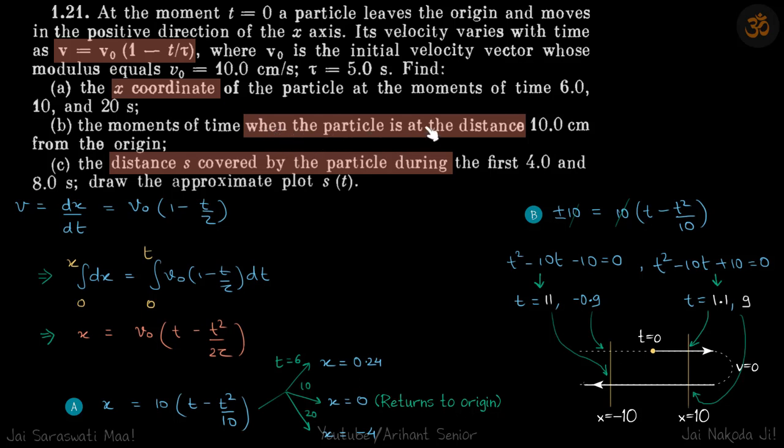Now, when the particle is at a given distance—he's using the word distance not displacement—but in this equation this x means displacement. So we'll use this equation again, and this time in place of x, which is displacement, we are going to put plus minus 10.